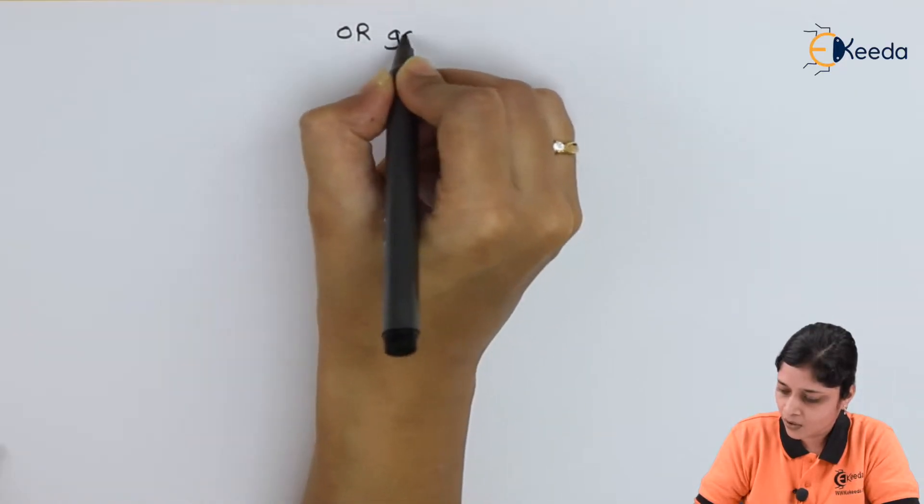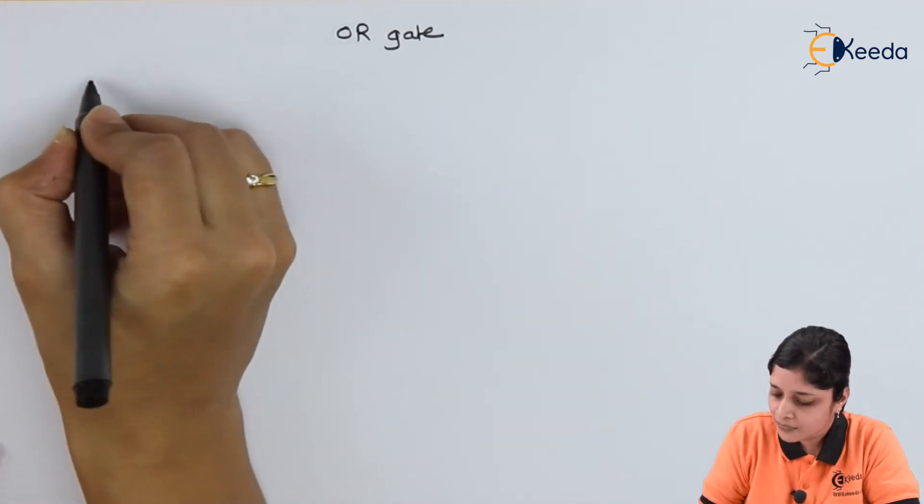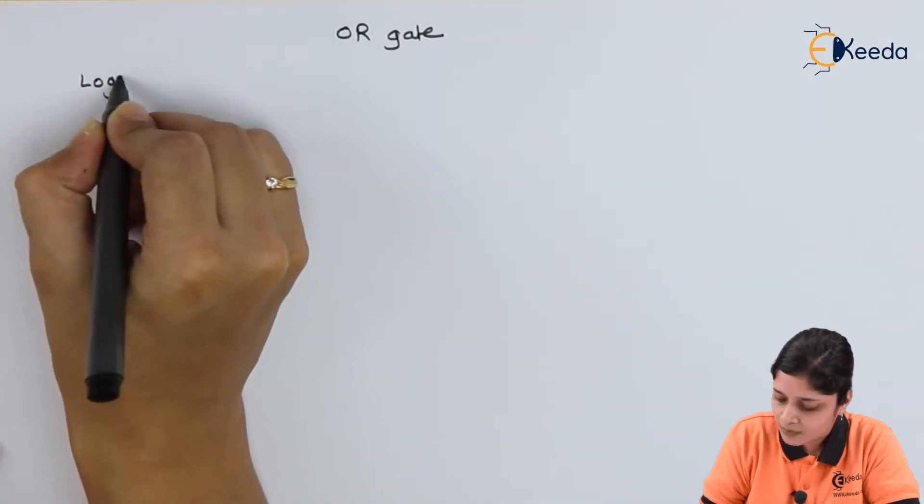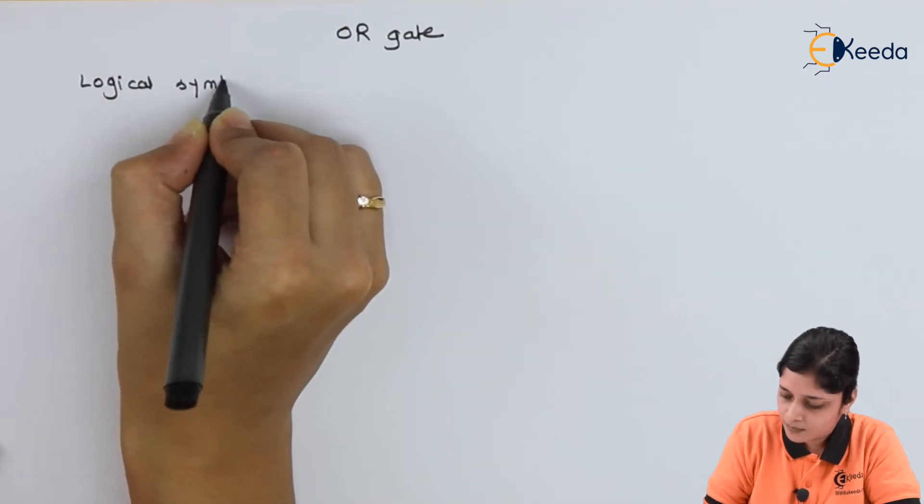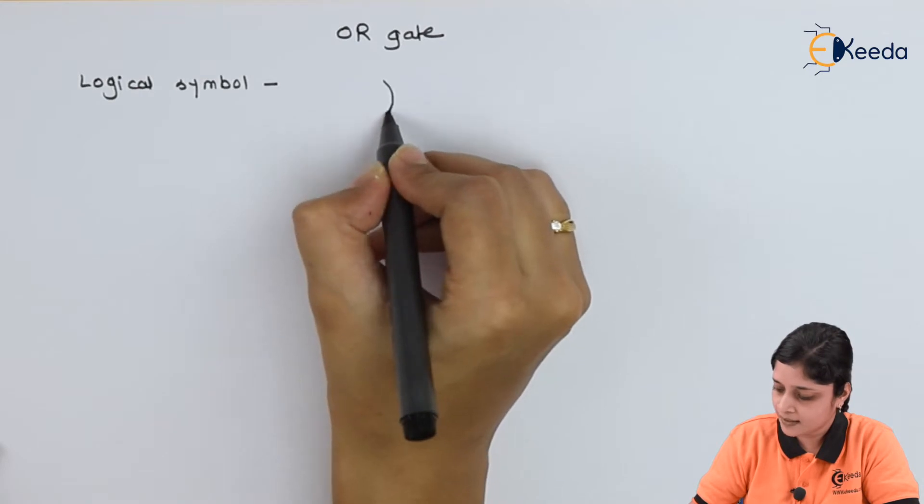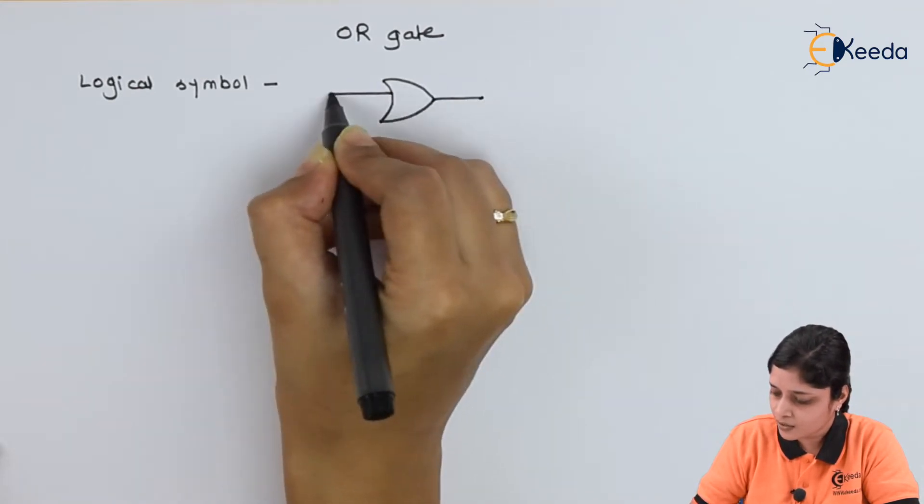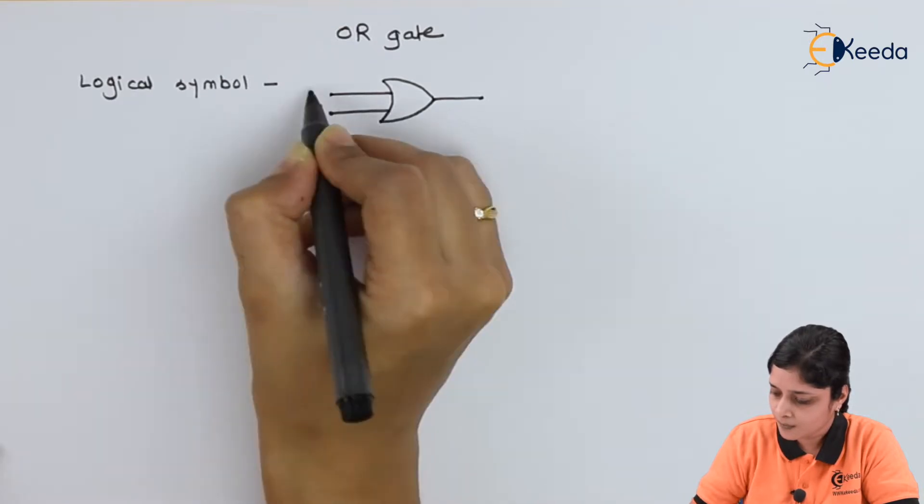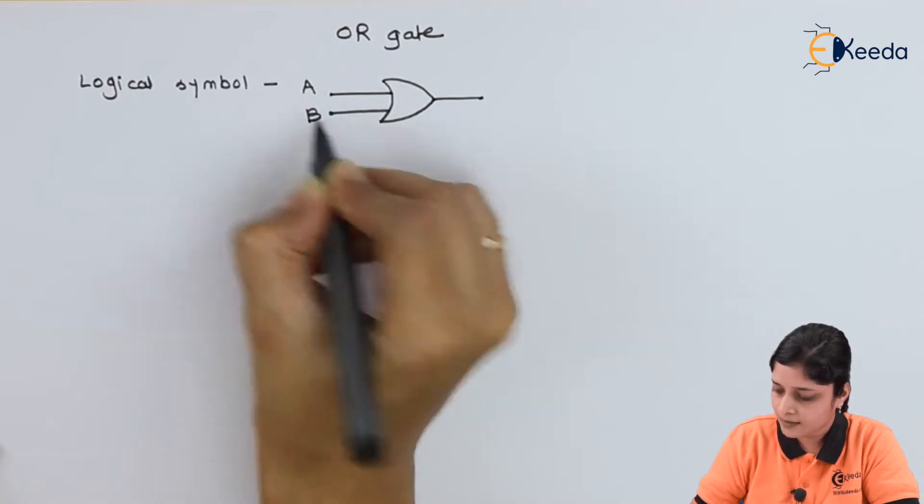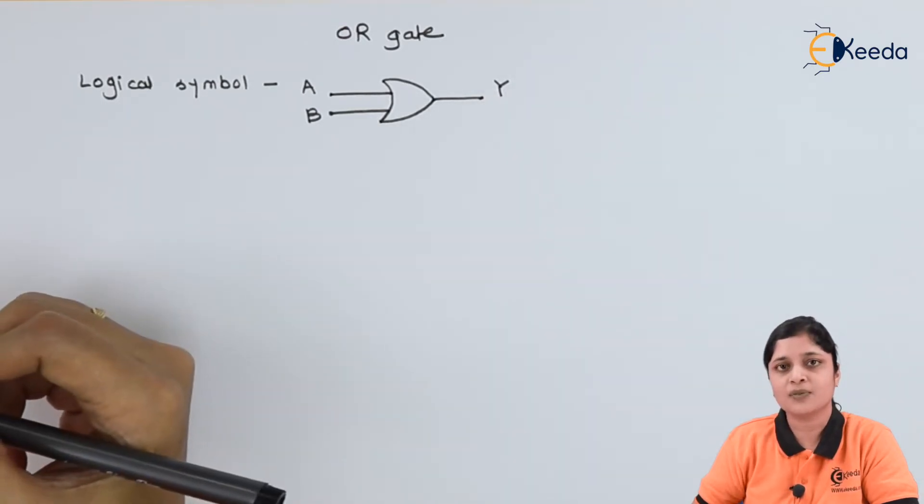Our heading is OR gate. It is a type of basic logic gate. We will see first of all its logical symbol. The logical symbol for OR gate is like this. It has two inputs A and B, and only one output, that is Y.